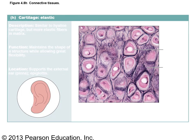Elastic cartilage has lacunae with cells plus the addition of elastic fibers, making it very pliable — you can bend and twist it and it bounces back into shape. It makes up the inner cartilage of the external ear and the epiglottis. A memory tip: E for elastic stands for ear and epiglottis; if you remember ear you can't go wrong.